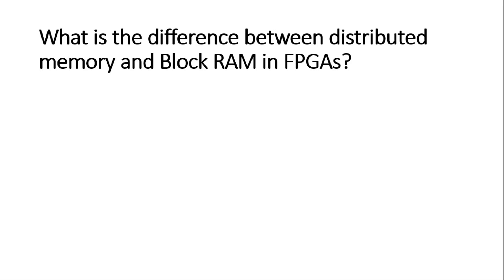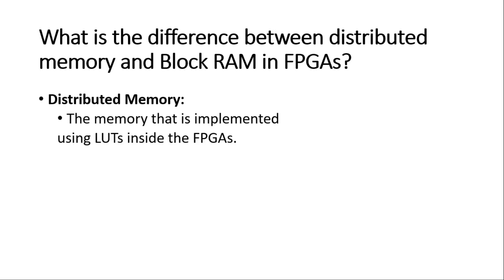The very first question is on your screen, and the question is: what is the difference between distributed memory and block RAM in FPGAs? Let us discuss distributed memory first. The distributed memory is the memory which is implemented using LUTs inside the FPGAs. Most of you would know that LUTs are used for implementation of digital logic, but here some of the unused LUTs can be used for implementation of distributed memory.